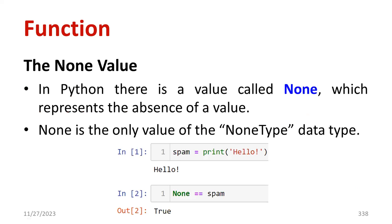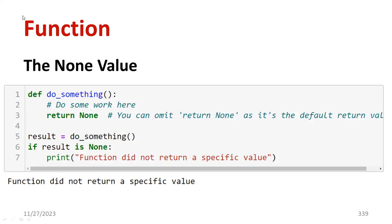Some examples of None: spam() prints hello, and None == spam() — the result will be True. In Python, there is a value called None which represents the absence of a value. If there is no proper value, the output will become None. You can practice these examples for your reference.